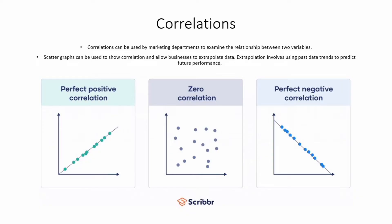Correlations can be used by marketing departments to examine the relationship between two variables. Scattergraphs can be used to show correlation and allow businesses to extrapolate data. Extrapolation involves using past data trends to predict future performance.